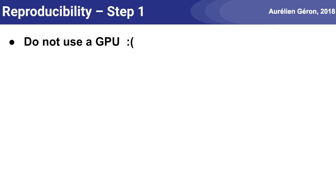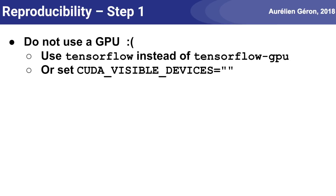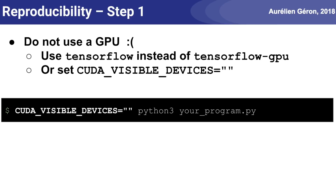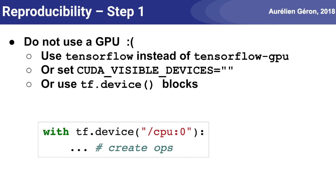Step 1: Unfortunately, I don't recommend using a GPU. If you don't have a GPU, or you installed the CPU-only version of TensorFlow rather than the GPU version, then you're fine. If not, you can set the CUDA_VISIBLE_DEVICES environment variable to an empty string, either before the program starts or within your program. But make sure you set it before a TensorFlow session is created. Another option is to explicitly pin every operation to the CPU by using a tf.device block.